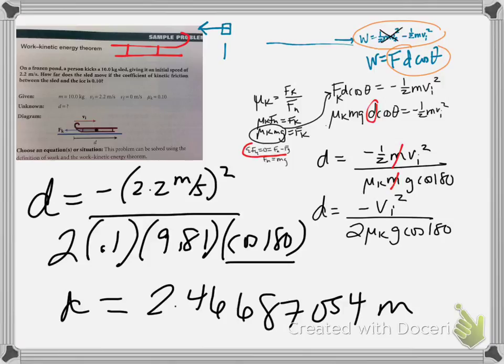The units cancel. Let me put units in, and we'll look at that. Okay, so we've got meters squared over seconds squared divided by meters per second squared. We end up with meters. And, of course, mu is unitless. Cosine 180 is unitless. Good?